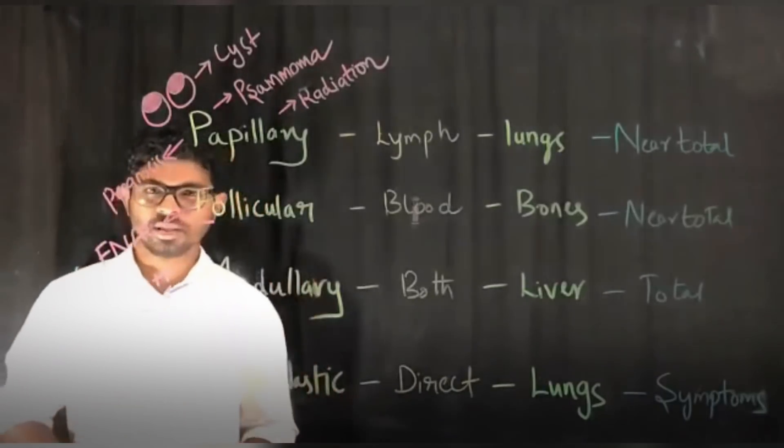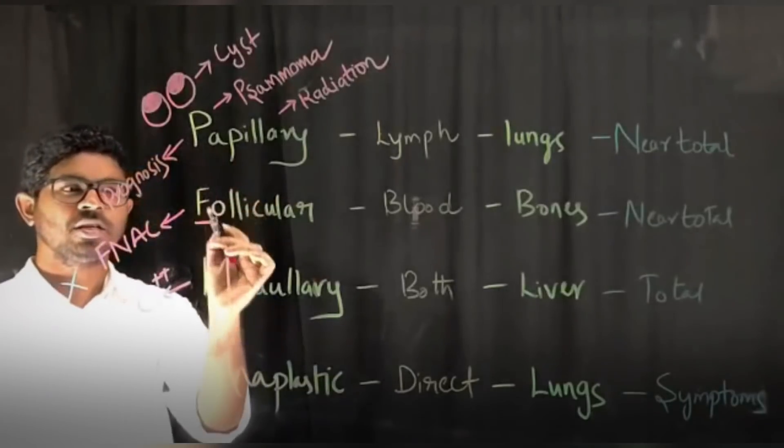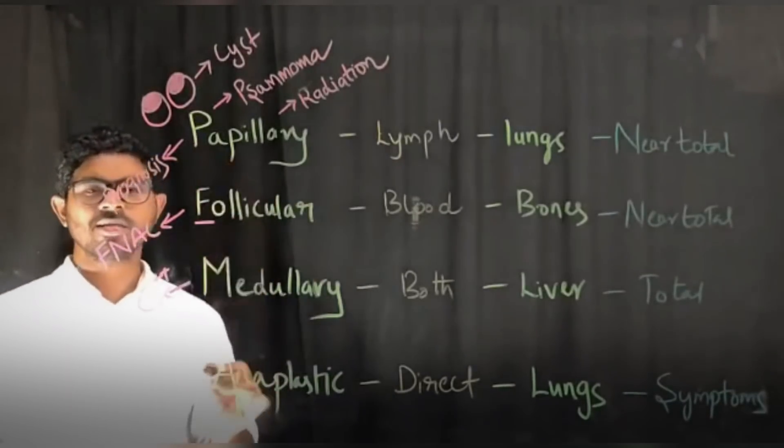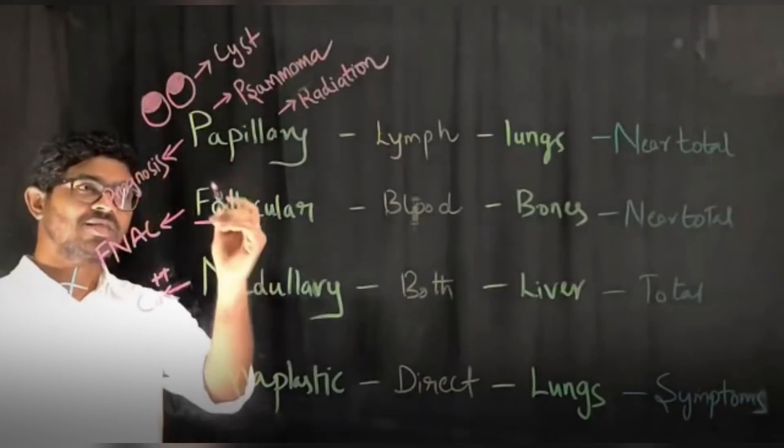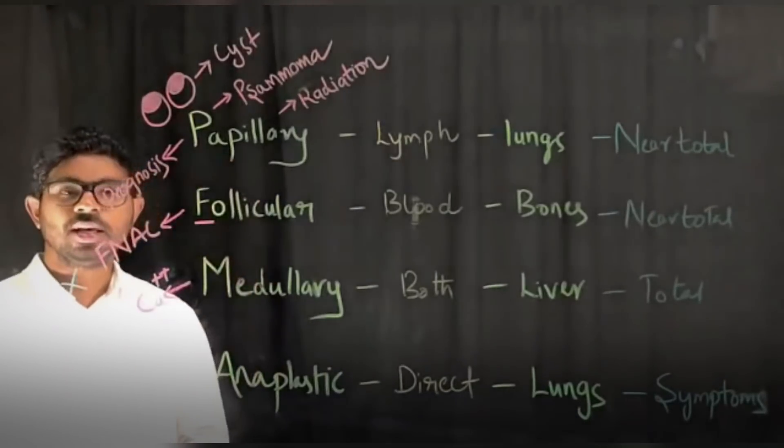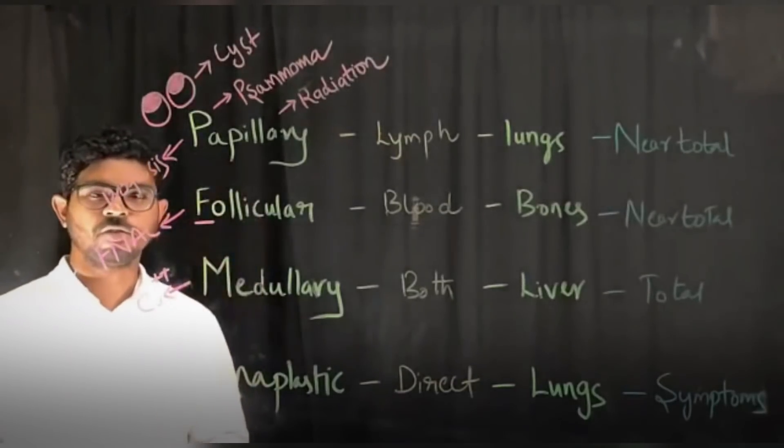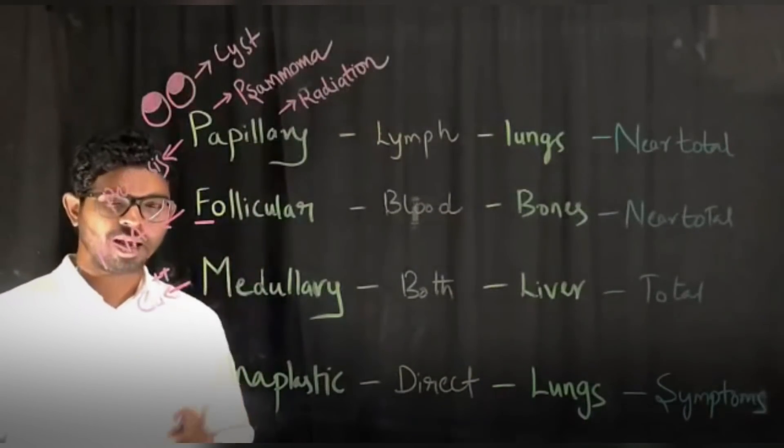Coming to the types, we have papillary, follicular, medullary, and anaplastic. This order is the order of incidence. They can ask you which thyroid carcinoma is most common - that's papillary, followed by follicular, followed by medullary, and followed by anaplastic.